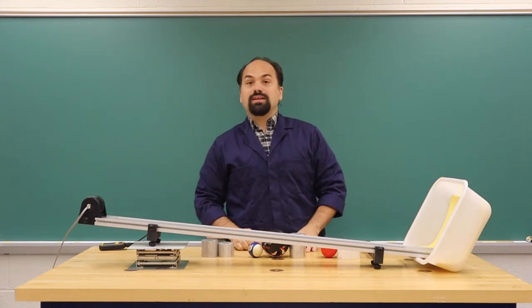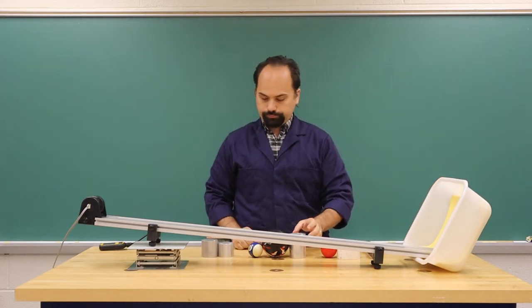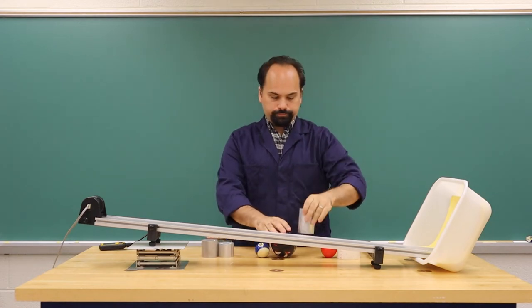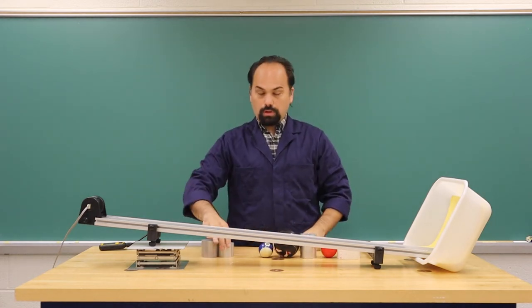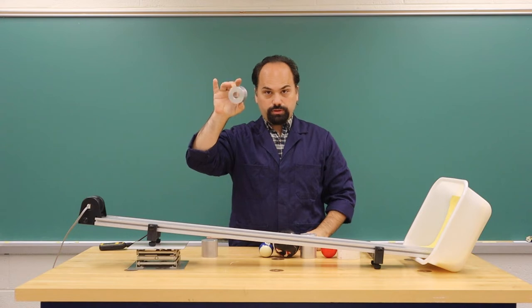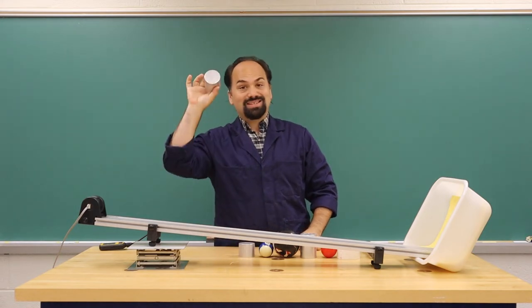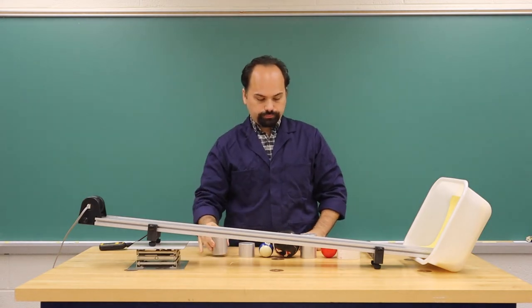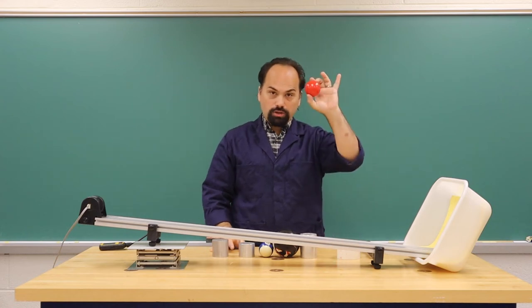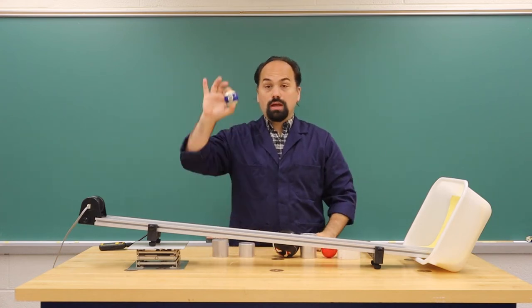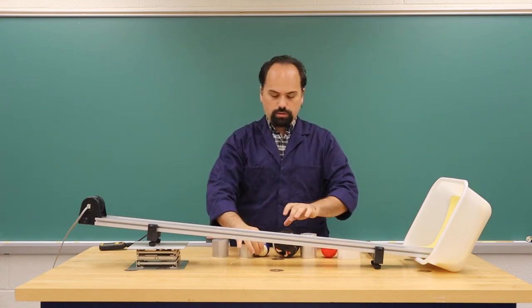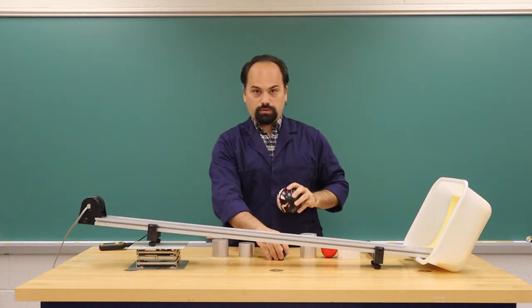Your various objects are a thin-wall cylinder, a thick-walled cylinder, a solid cylinder, a hollow sphere, a solid sphere, and a large solid sphere.